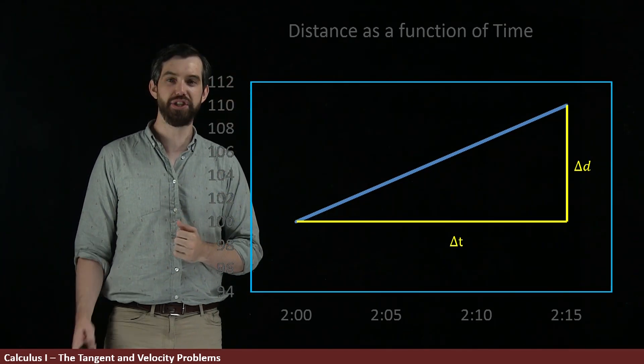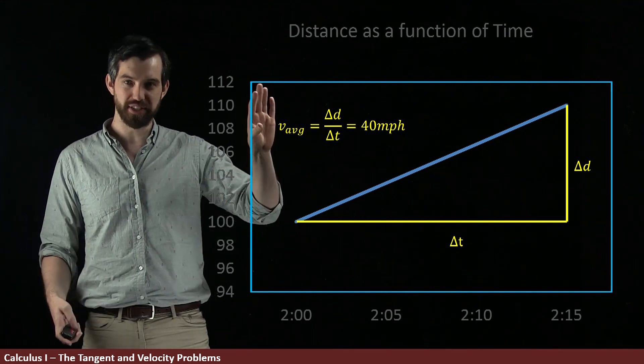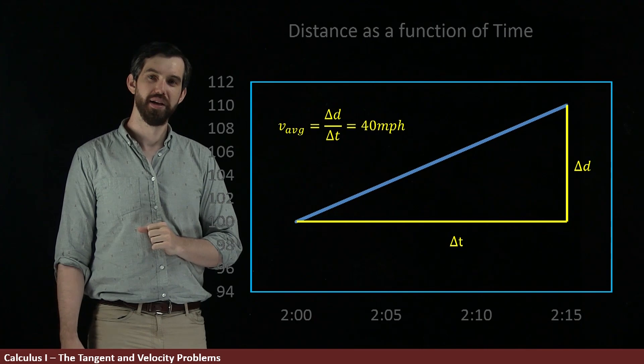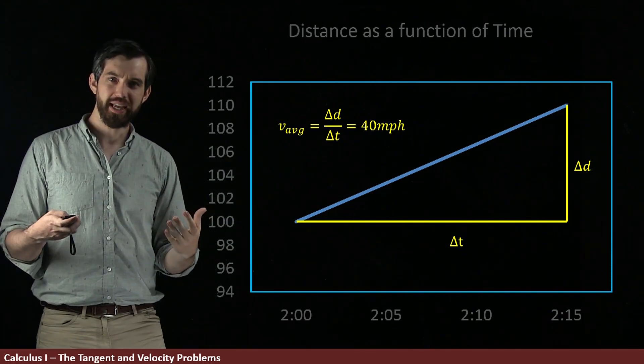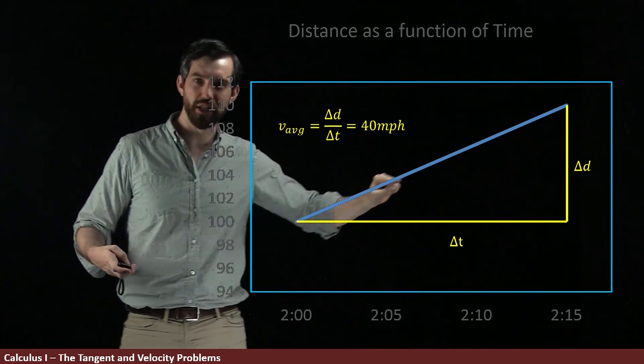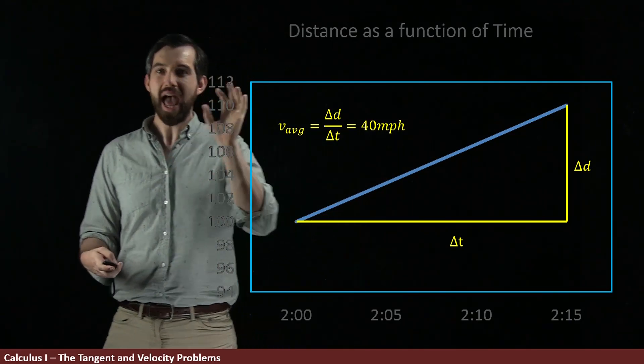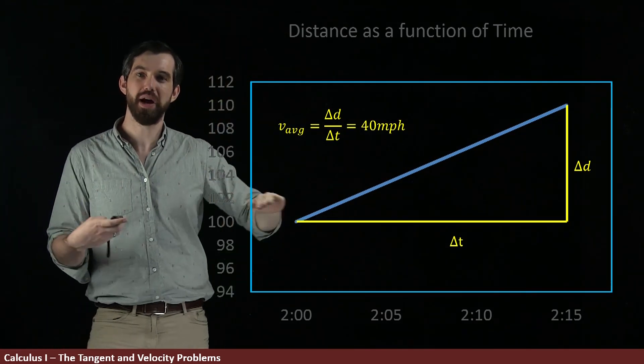And so we can do the same computation in that we can say that the average velocity, the delta D over the delta T, is equal to 40 miles per hour. Or another way to think about this is this is the same thing as the slope of this particular straight line here. The average velocity is the slope of that straight line.